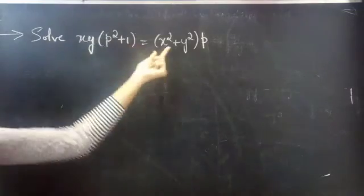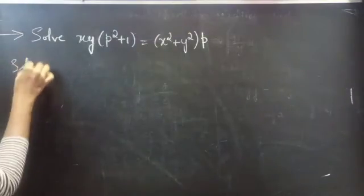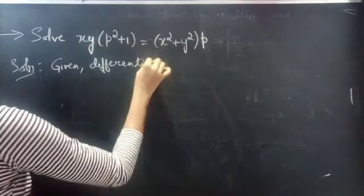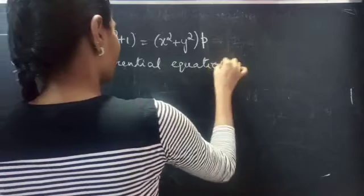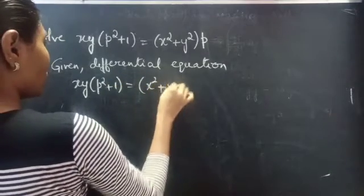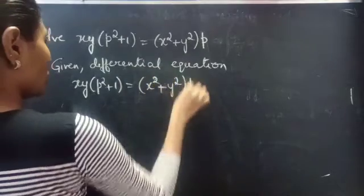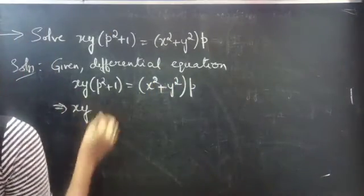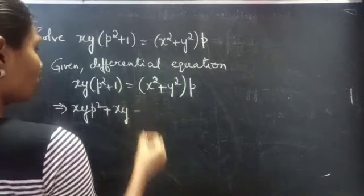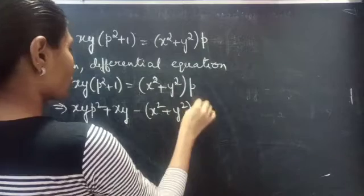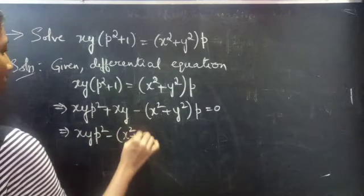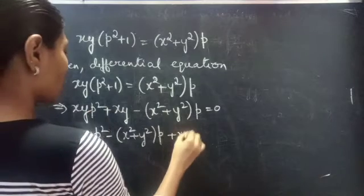Solve: xy into P squared plus 1 equals to x squared plus y squared into P. Given the differential equation xy into P squared plus 1 equals to x squared plus y squared into P, we can write this as xy P squared plus xy minus of x squared plus y squared into P equals to 0. We can rewrite it as xy P squared minus of x squared plus y squared into P plus xy equals to 0.